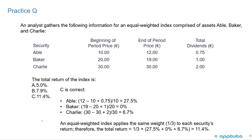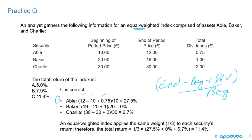For the equal-weighted index total return, we calculate the total return for each asset using (ending − beginning + dividends) / beginning. For A: (12 − 10 + 0.75) / 10 = 27.5%. For B: (19 − 20 + 1) / 20 = 0%. For C: (30 − 30 + 2) / 30 = 6.7%. Summing 27.5 + 0 + 6.7 = 34.2%, divided by 3 gives 11.4%. The correct answer is C.